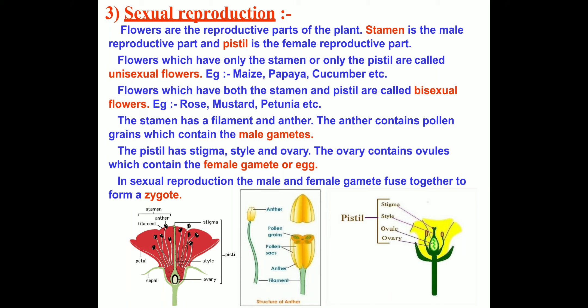Good morning children, welcome back. Today we will study about sexual reproduction, that is reproduction part 3. Flowers are the reproductive parts of a plant. Stamen is the male reproductive part and pistil is the female reproductive part.